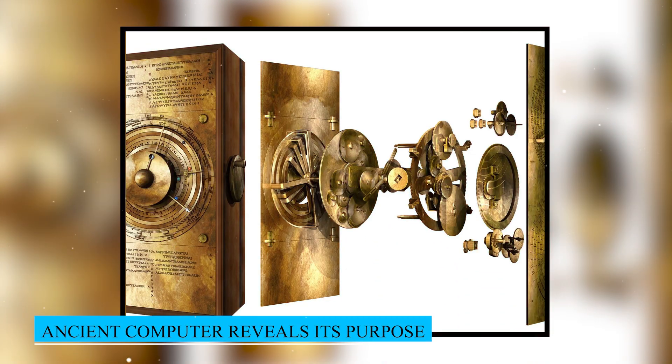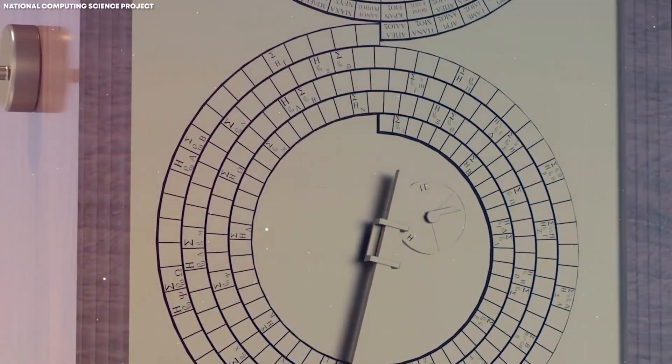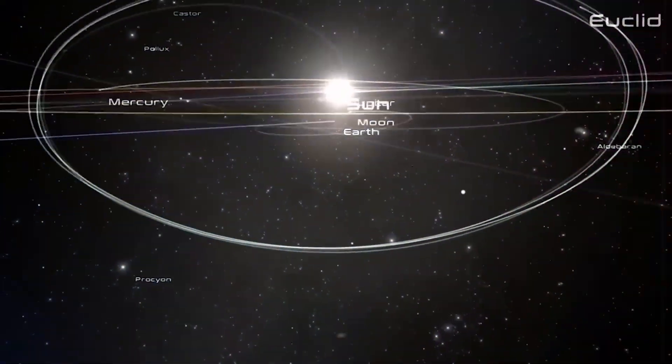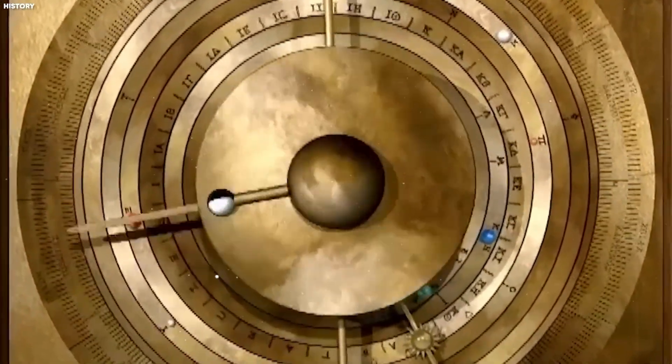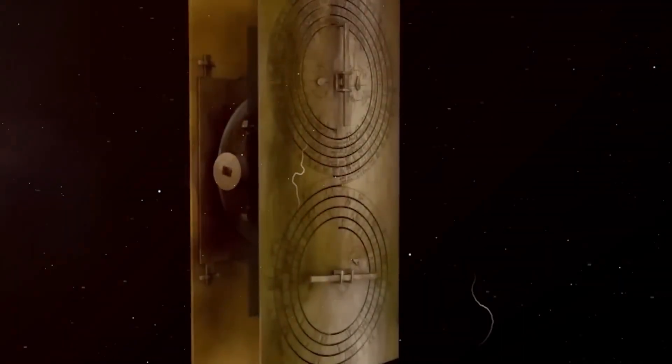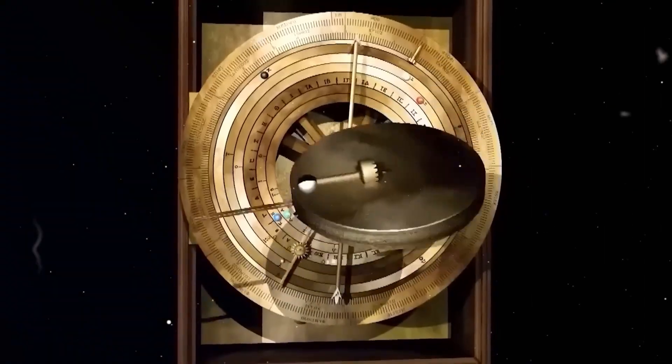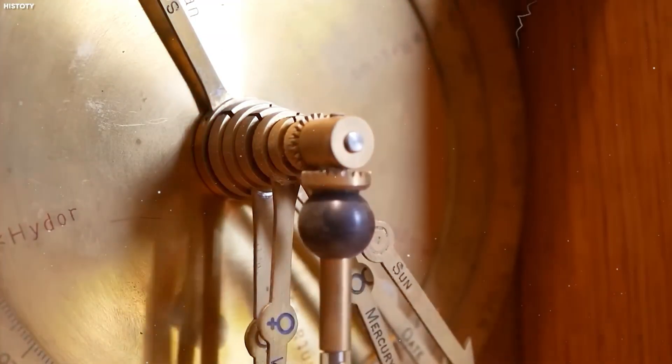The ancient computer reveals its purpose. What they found on the back of the mechanism stunned historians: there was a spiral dial marking 235 lunar months—a complete 19-year Metonic cycle that aligned the moon and sun calendars. Another spiral recorded 223 lunar months, the famous Saros cycle used to predict eclipses. This wasn't a toy. It was an ancient analog computer tracking the heavens with mechanical precision. Tiny Greek inscriptions labeled every eclipse: day or night, solar or lunar, even color notes—hints of how the sky would appear when the shadow fell. One dial even counted down to the next Olympic Games.